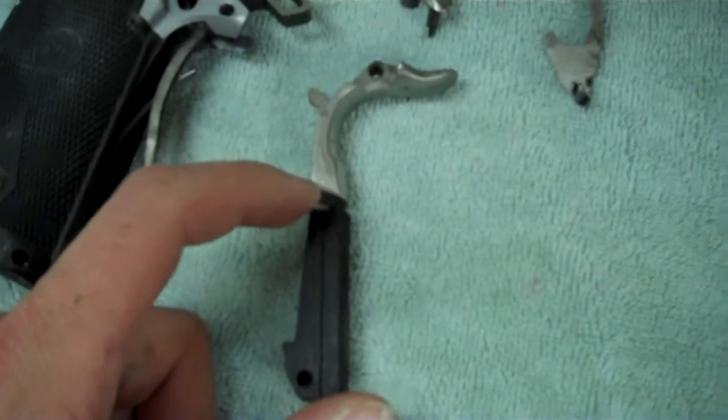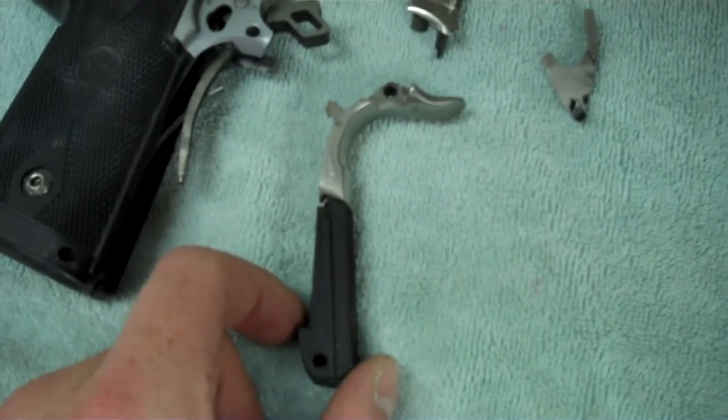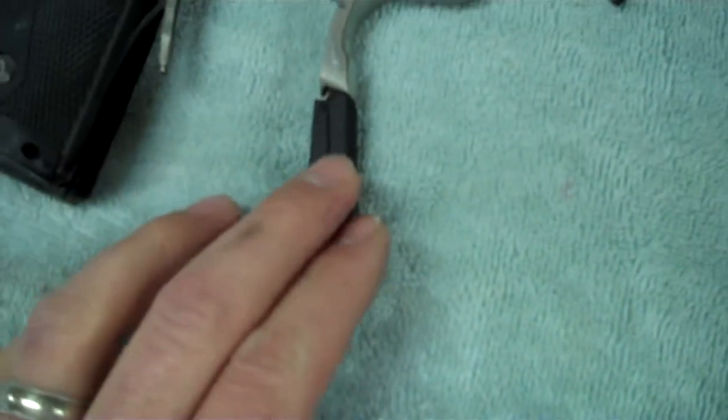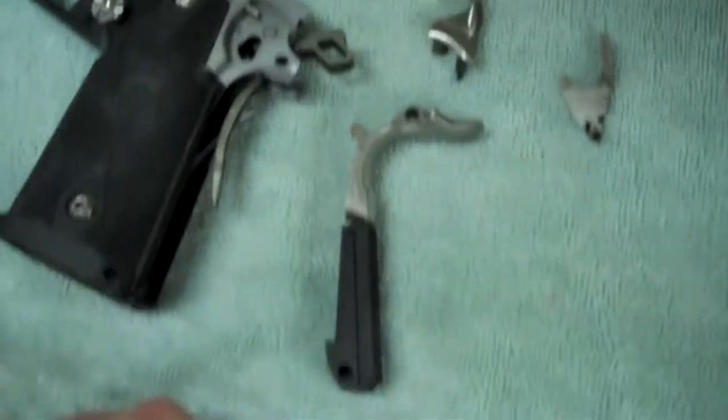You're pinning these two parts together to keep your grip safety depressed, which is legal in USPSA limited. That's what I'm going to do as long as the thumb safety works correctly.